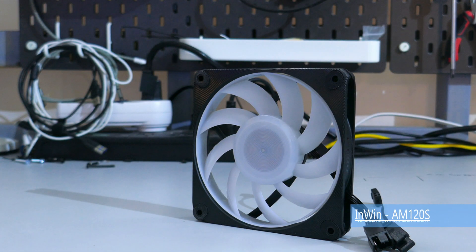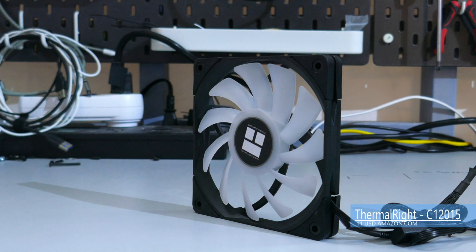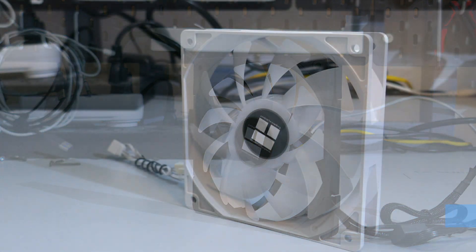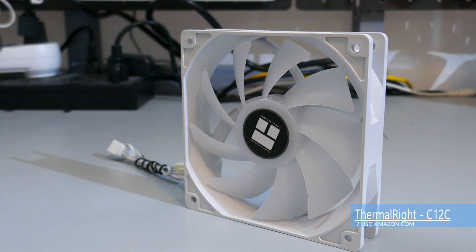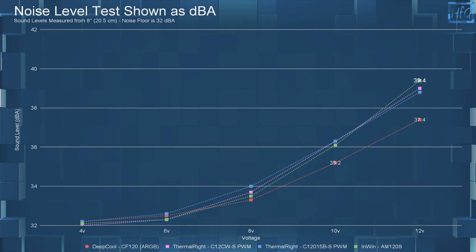Okay, I'll be comparing the Inwin AM120S to the Deepcool CF120, the Thermalright C12015BSPWM, and the Thermalright C12CWSPWM. So when it comes to sound levels, all these fans are pretty similar, but the CF120 has just a slightly lower DBA at 10 and 12 volts.